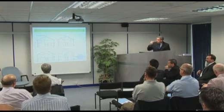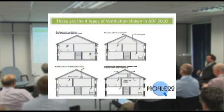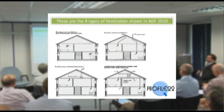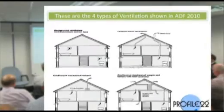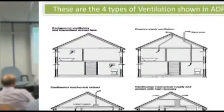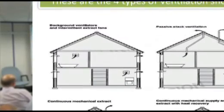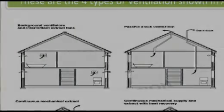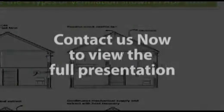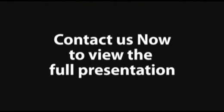Part F still has the same four major systems in place, although they do now allow an additional system, but that has to be proven through building control and planning. We have system one, which is probably used the most at the moment, which is background ventilation with intermittent extract fans. System two is a passive stack system, where we use flues to move the air through the property, again with background ventilation.